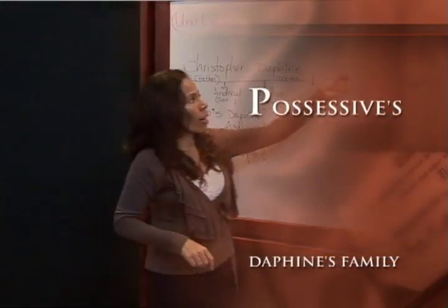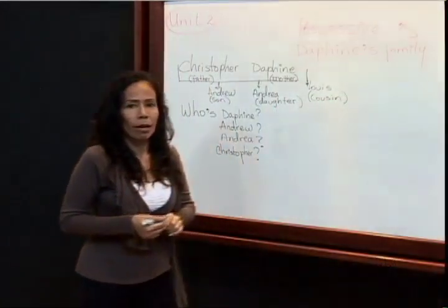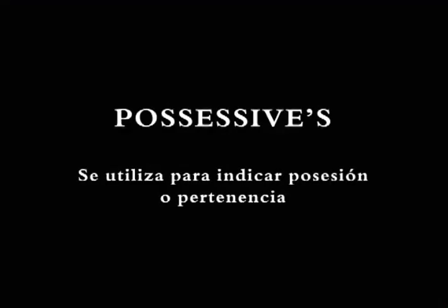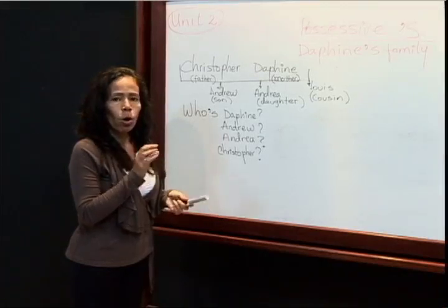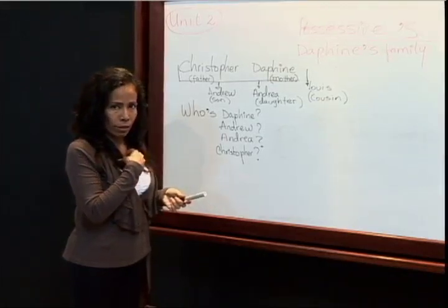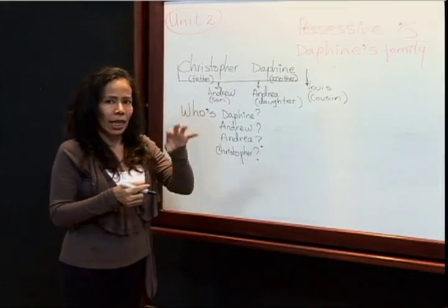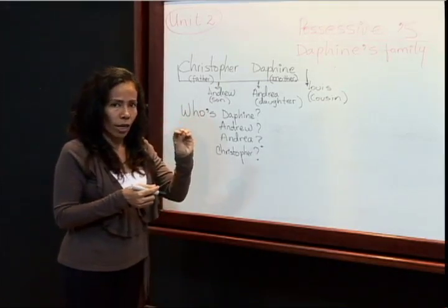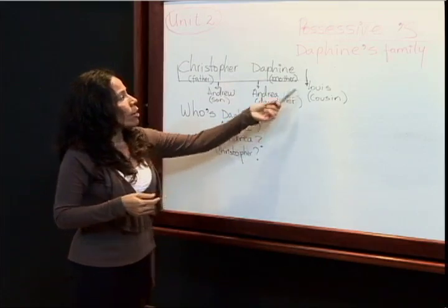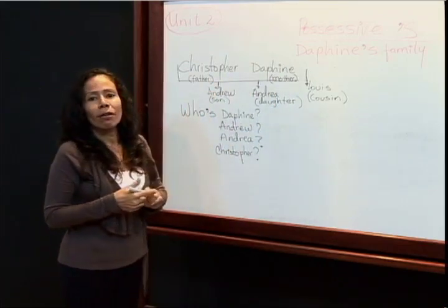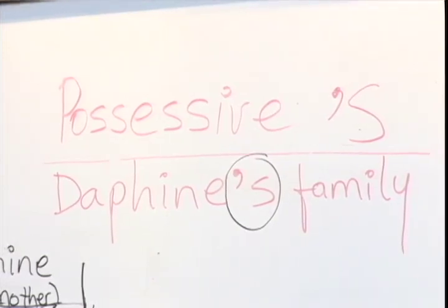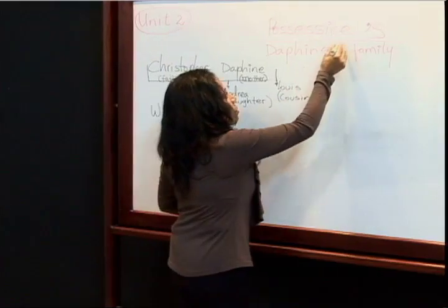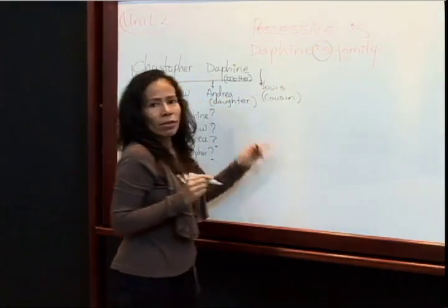Este posesivo sajón lo utilizamos para indicar posesión o pertenencia, ya sea cuando alguien tiene un parentesco con nosotros o cuando un objeto nos pertenece. En español decimos 'de'. Vamos a hablar hoy de la familia de Daphne — Daphne's family. La familia de Daphne.